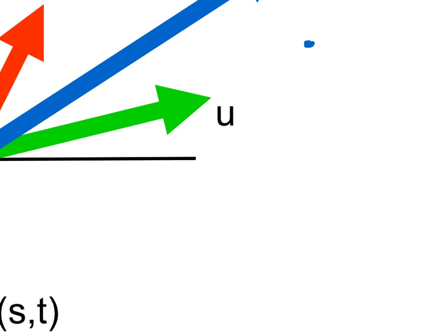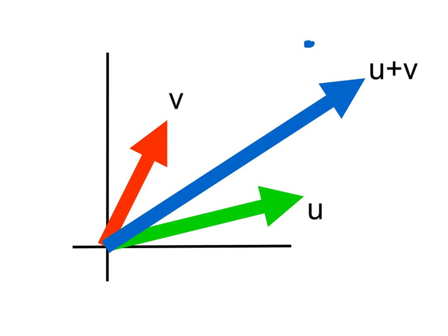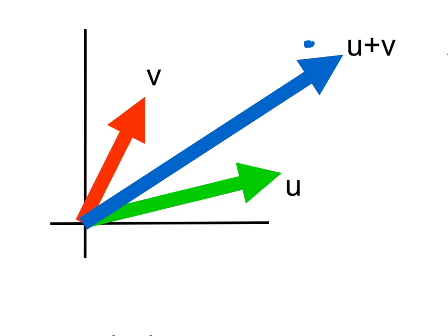We have that the coordinates of u were s and t, so that means that this is s and that this height is t. And then for v...